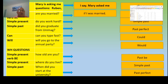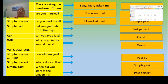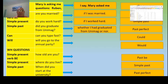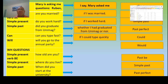As you can see in this first part, we have yes/no questions — are, do, did, can, will. For these we use 'if' or 'whether.' For example: 'Do you work hard, Ruben?' → Mary asked me if I worked hard. 'Did you graduate from Maddalena University?' → Mary asked me whether I had graduated from Maddalena University or not. 'Ruben, can you type fast?' → Mary asked me if I could type quickly. 'Ruben, will you go to the annual party?' → Mari asked me whether I would go to the annual party or not.